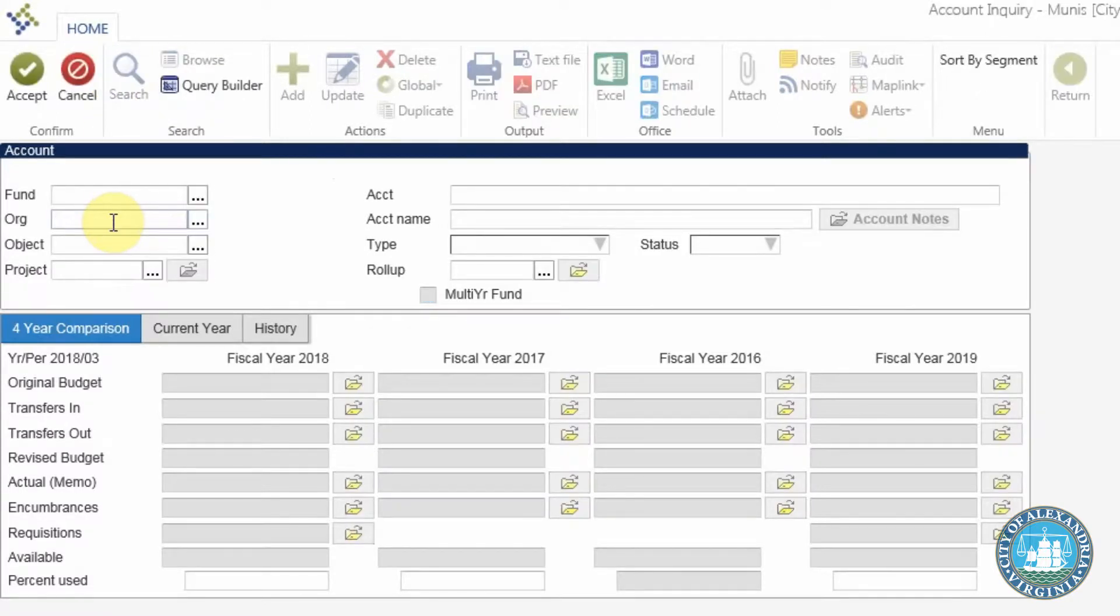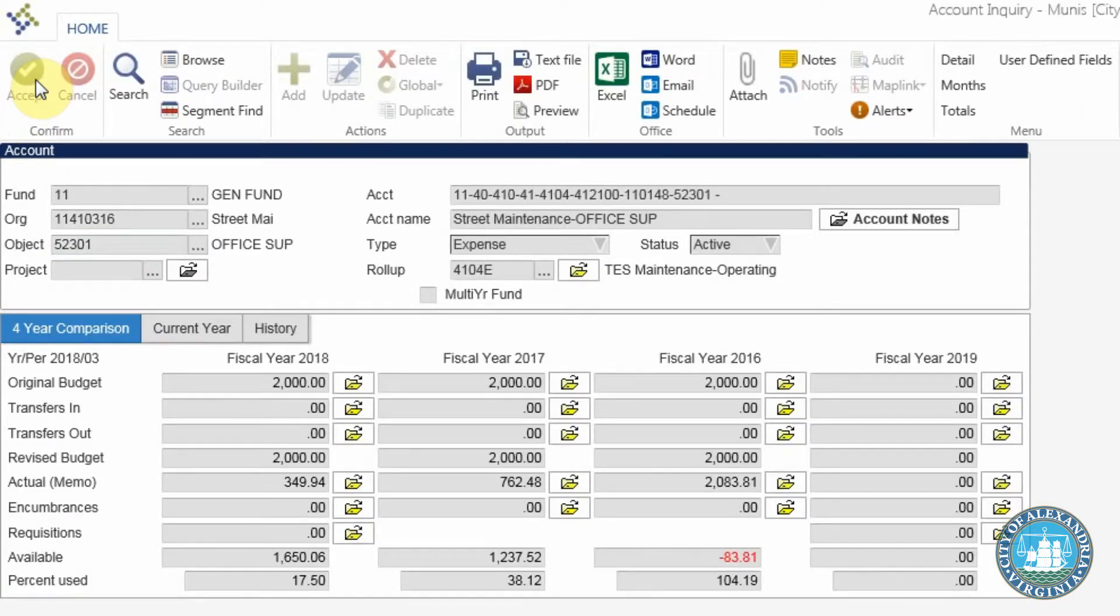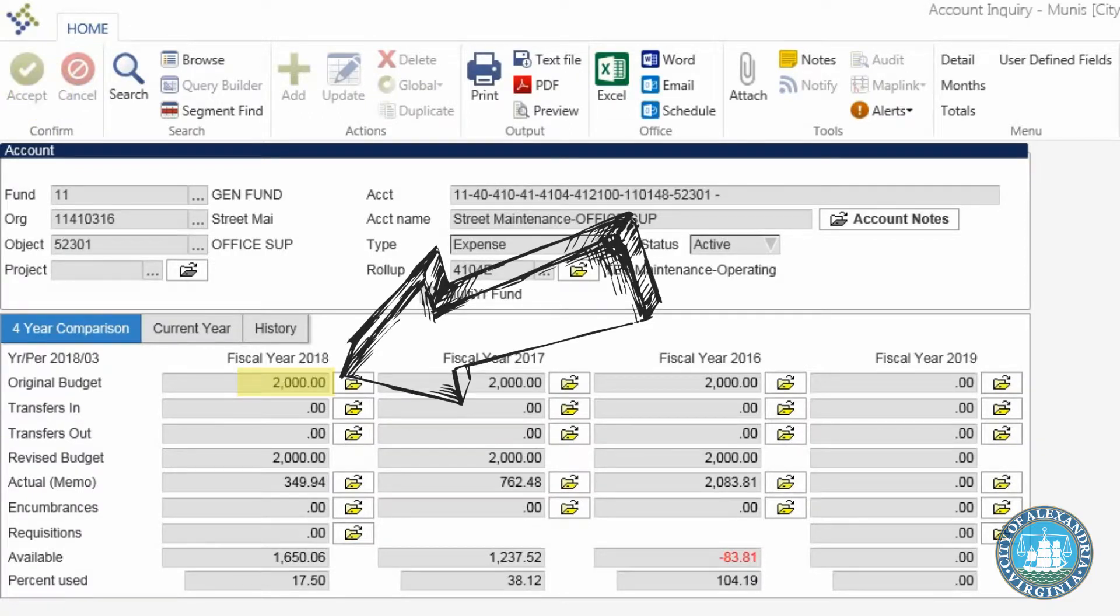Or by entering the short string into the account inquiry screen in Munis. And to do this, you just enter 1141-0316 into the org field, press tab, and enter 52301 into the object field. Leave the project field blank because this is a general fund org, and then press enter or accept. Munis will return the results of this short string search and... Bing! Look! $2,000 in budget authority for fiscal year 2018.